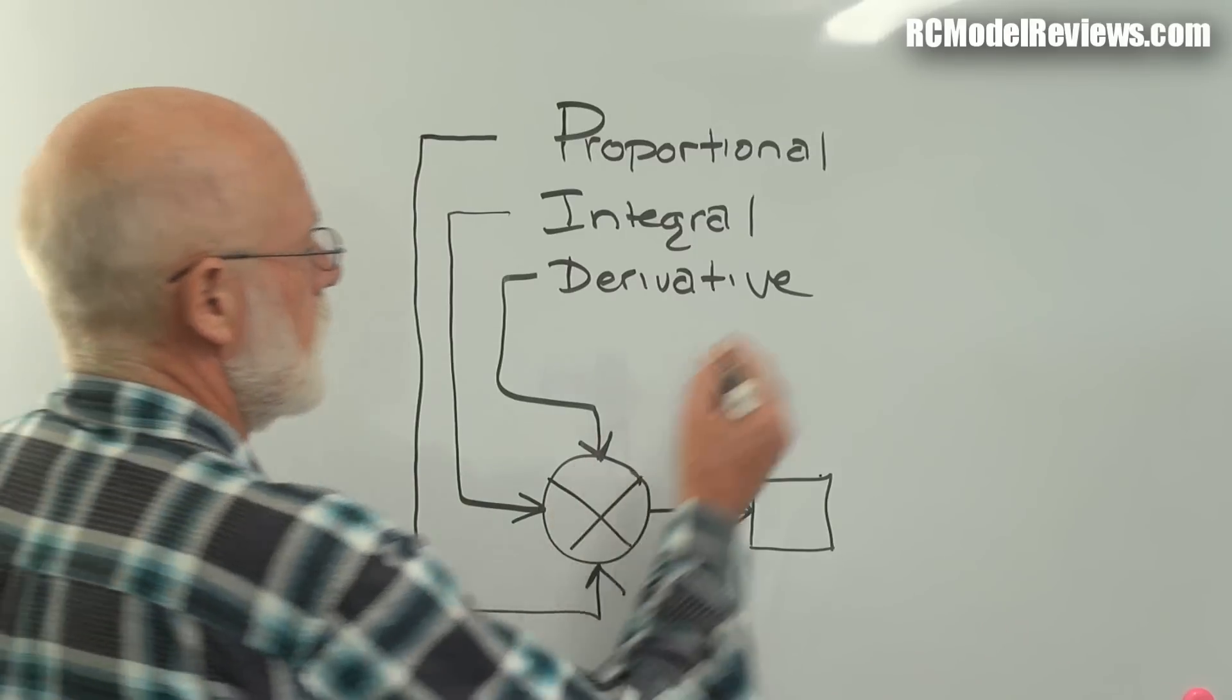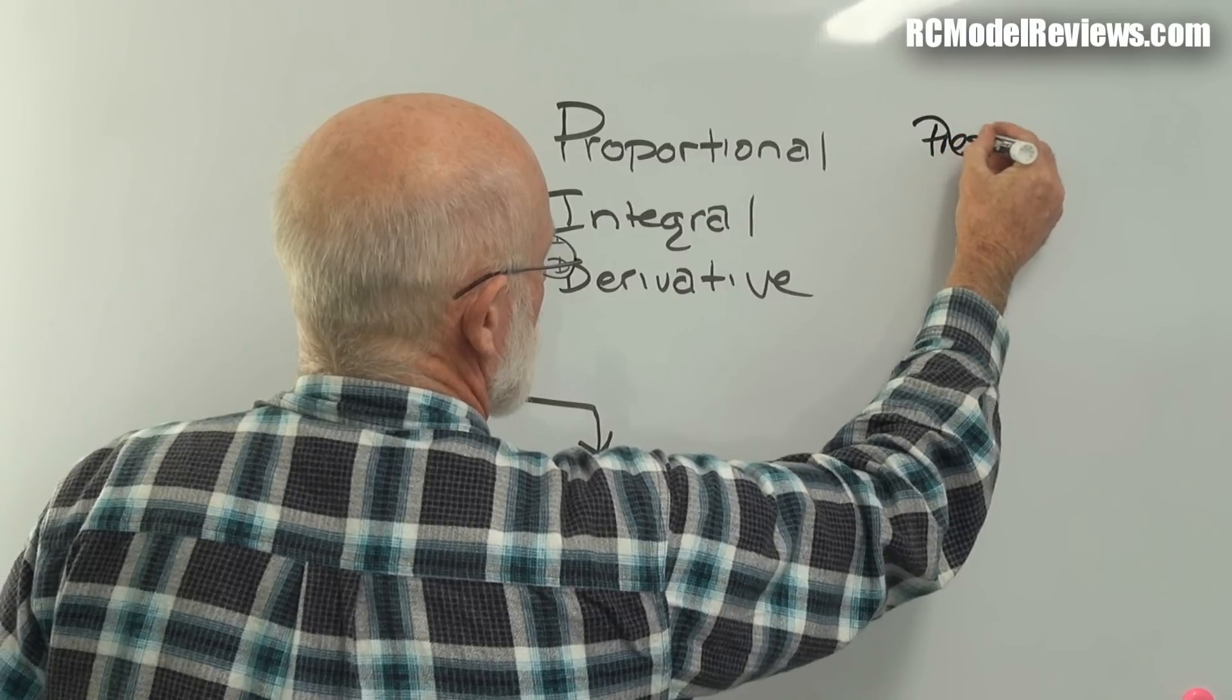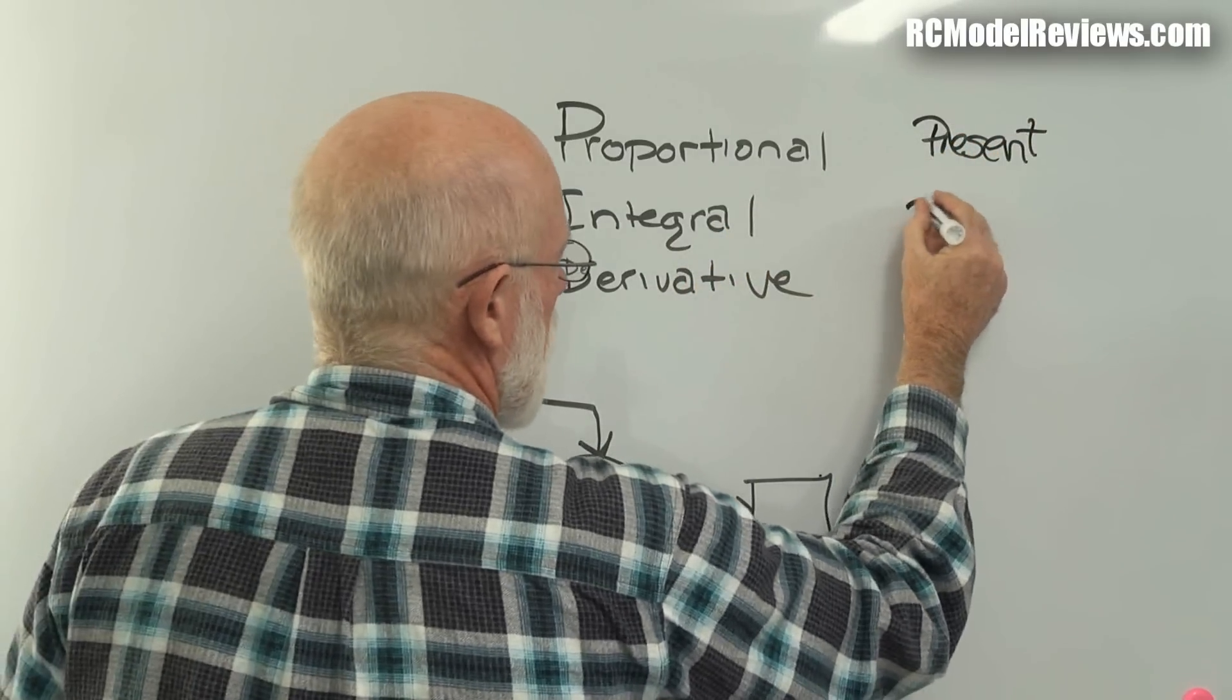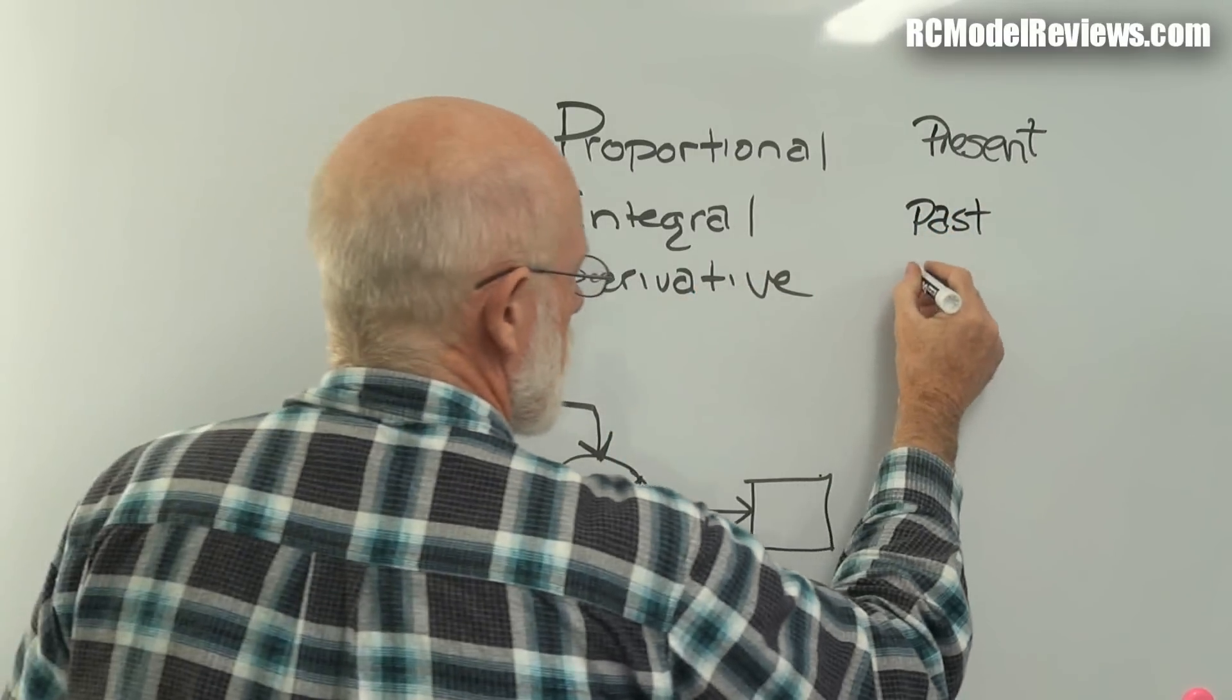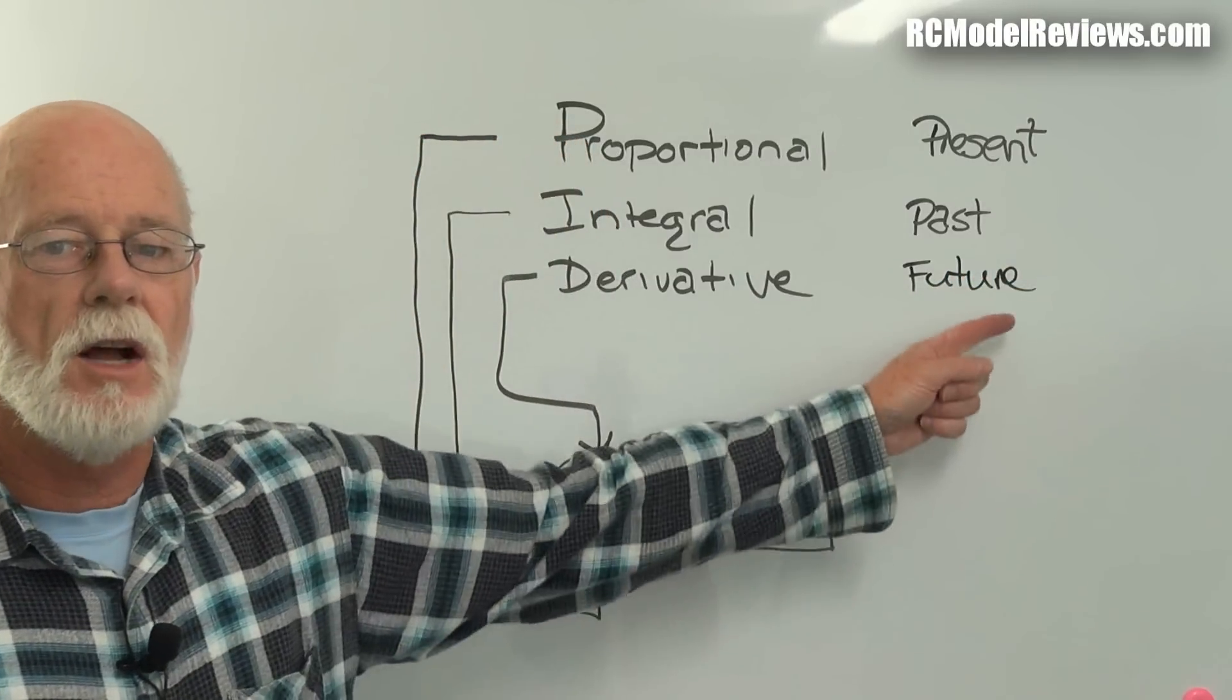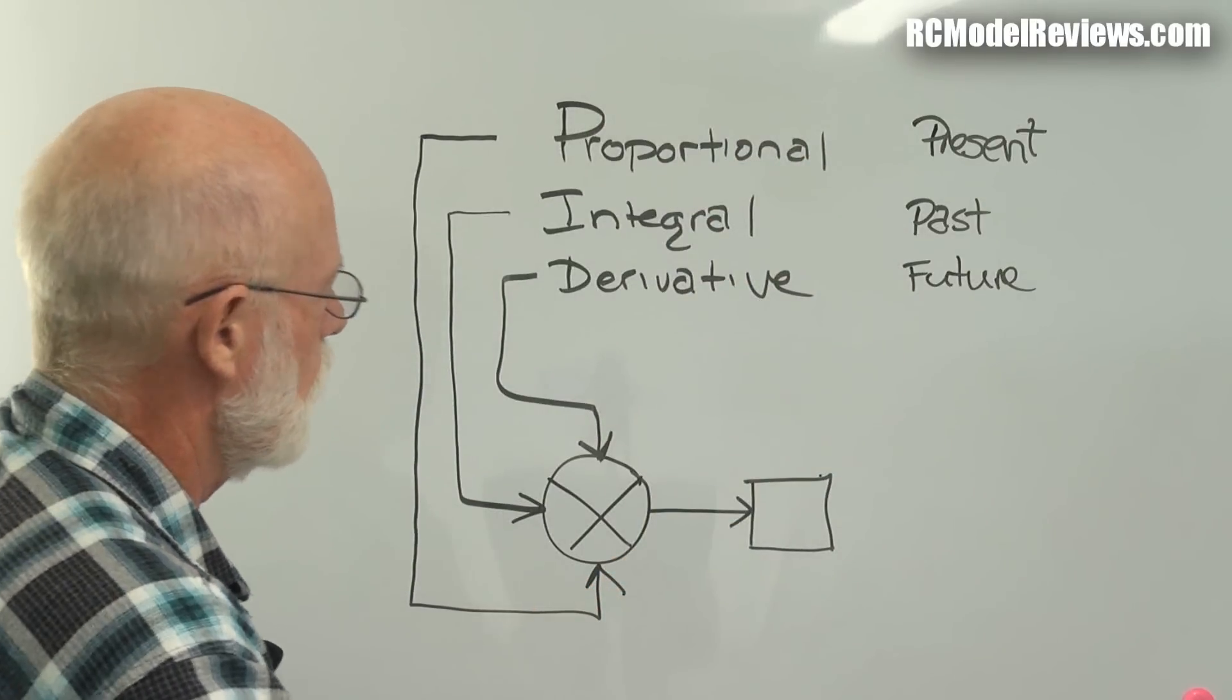I'm going to give proportional the name present, as in right now. Integral, I'm going to give it the name past, as in it's already happened. And derivative, I'm going to give it the name future, as in hasn't happened yet, but it's going to. These are the alternative definitions. This is how things work, and I'm going to explain how that works.